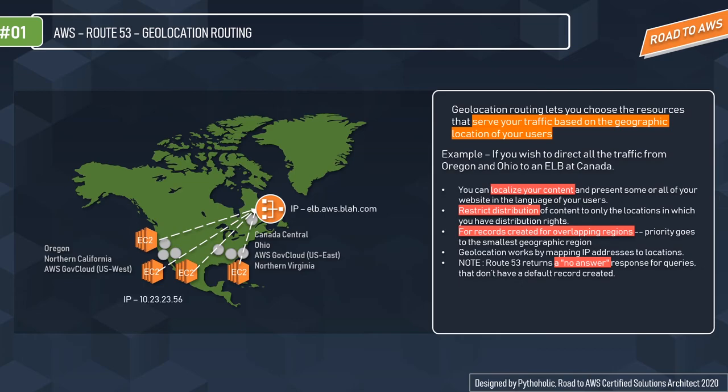Specific IPs are mapped to their particular location. Note that Route 53 returns a no-answer response for queries that don't have a default record created, so make sure you have one.